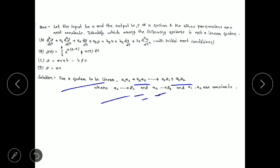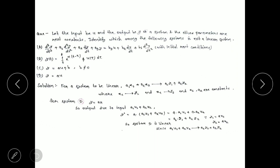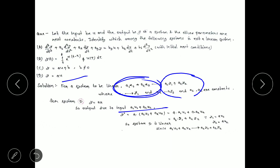For system D, y is equal to au. We have to find the output due to input a1u1 plus a2u2. The output due to a1u1 plus a2u2 is: y equals a times (a1u1 plus a2u2). Multiplying a inside the bracket gives a1·(au1) plus a2·(au2). Since au1 is y1 and au2 is y2, we get a1y1 plus a2y2. The condition is satisfied, so system D is linear.